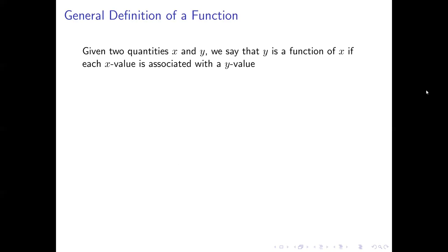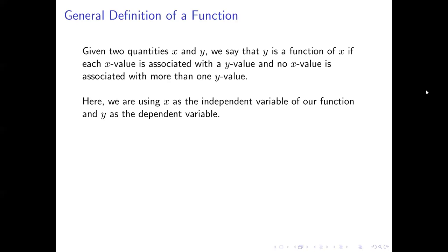That leads us to the general, abstract idea of a function. Let's say we have two quantities — two things we can assign numbers to — and we'll call them x and y. We say that y is a function of x if each x value is associated with a y value, and no x value is associated with more than one y value. Once you pick your value for x, you're automatically forced into a particular value for y. Here, x is the independent variable and y is the dependent variable.